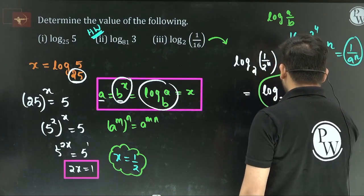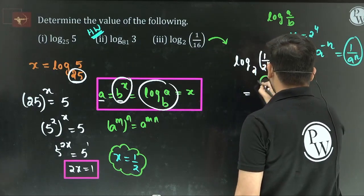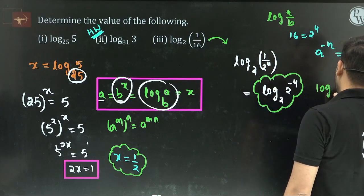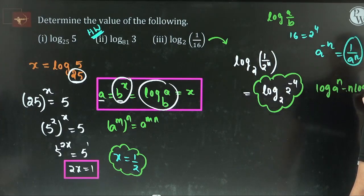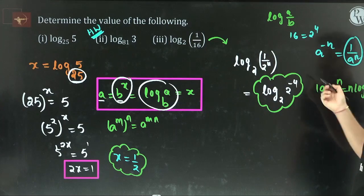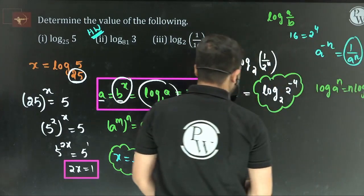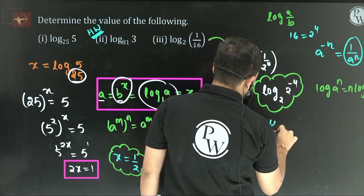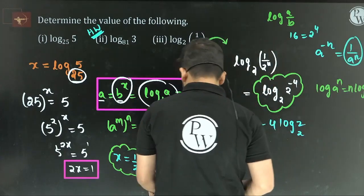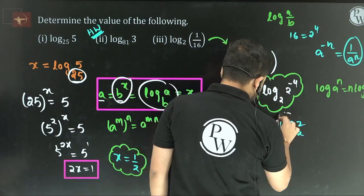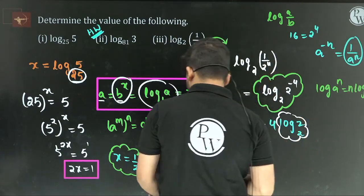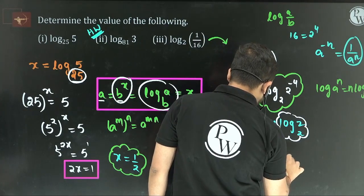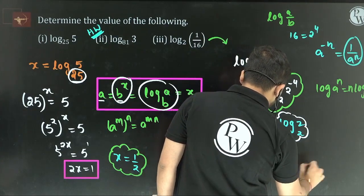So now using the property: log A to the power of N equals N times log A. Here, A is 2 and N is minus 4. So we get minus 4 times log base 2 of 2. And we already know — whenever argument and base are equal, the value is 1. So minus 4 times 1 equals minus 4. That's the answer.